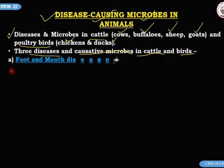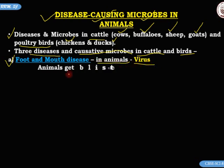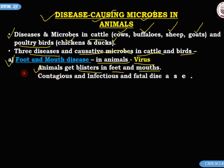Let us study them one by one. The first one is foot and mouth disease. Foot and mouth disease in animals is caused by a virus, and this virus causes blisters in the feet and mouth of the animals. Animals get blisters in their feet and mouths, and this foot and mouth disease is contagious, infectious, and also fatal.